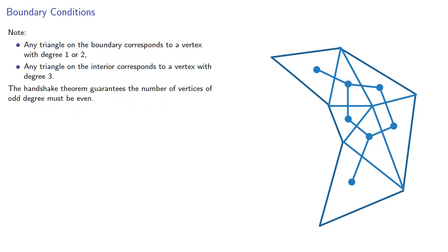The handshake theorem guarantees the number of vertices of odd degree must be even. And so the layout on the boundary determines whether there are an odd or an even number of interior triangles.